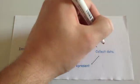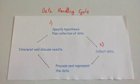The next stage, step two, is then to actually collect the data, to carry out the experiment, or the survey, or to collect the primary or secondary data.